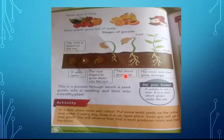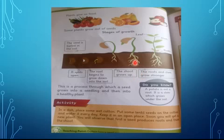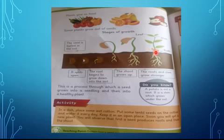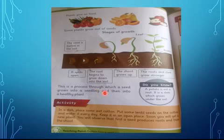The fourth stage: the seed grows up. From the seed, the plant grows upward. This is called a shoot. The fifth stage: the roots and stem grow stronger. The root becomes stronger underground. Now the plant has leaves and a stem — first the stem, then the leaf. These are the stages of a plant. This is the process through which a seed grows into a seedling and then into a healthy plant.